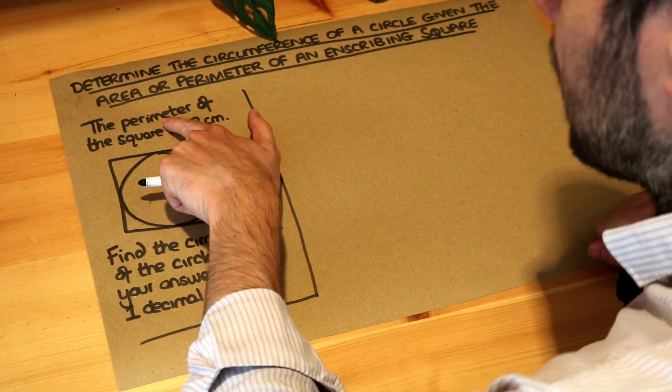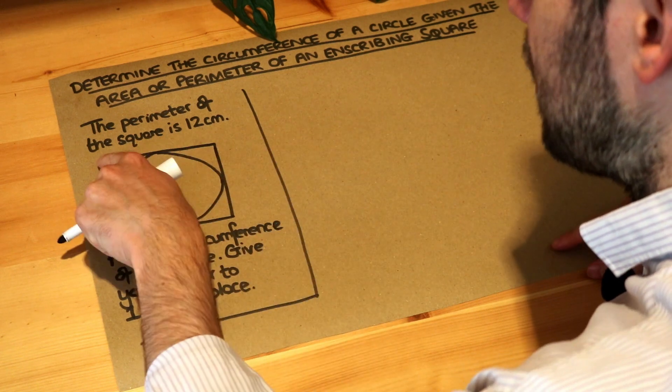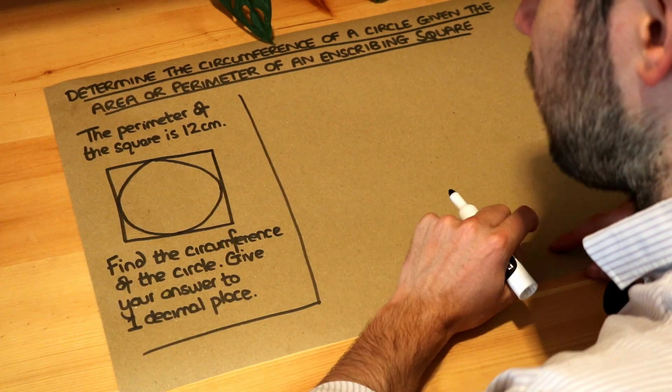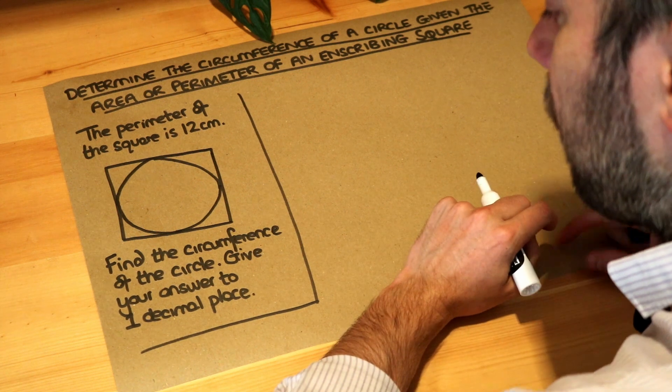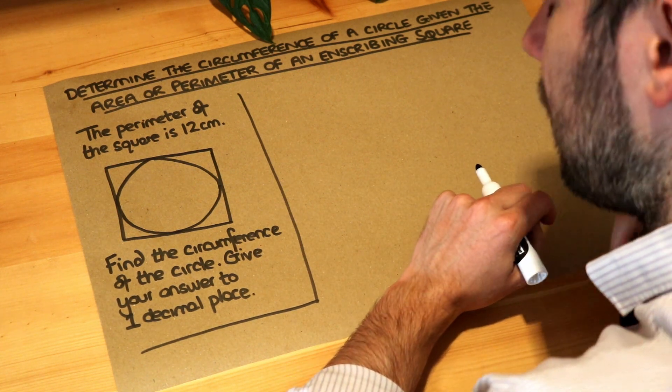We're told the perimeter of the square is 12 centimeters, so the total length around the outside of the square is 12, and we want to find the circumference of the circle giving our answer to one decimal place.